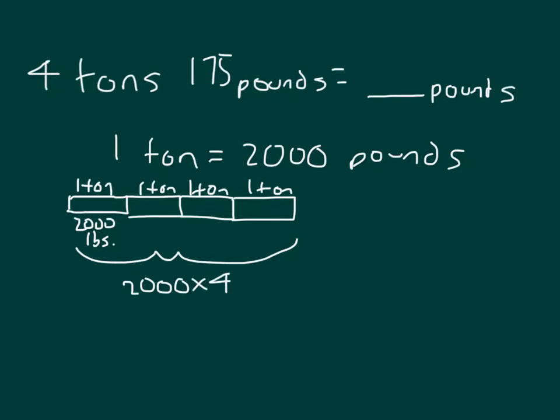So we have 2,000, which was our conversion factor, times 4. And yet we also have, for the problem, 175 pounds. So I'll add that back on in. I abbreviated pounds with the LBS for pounds. This is 8,000 pounds for the 4 tons. And then I will add in the 175 to get 8,175 pounds.